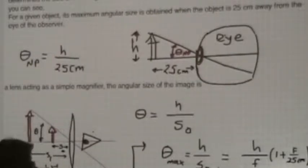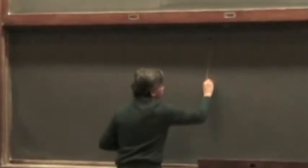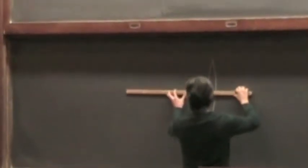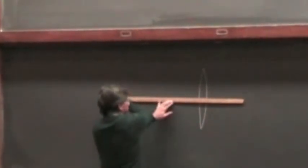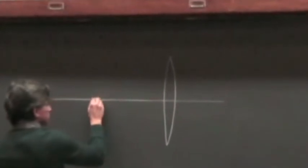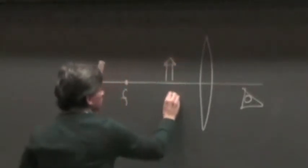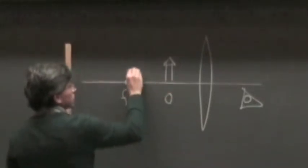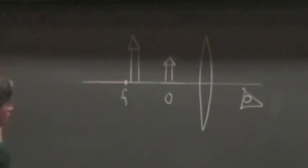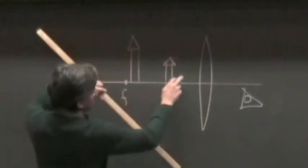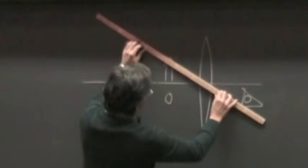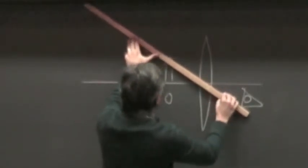But then you can use a magnifying glass. If you use a magnifying glass, the angular size of the object will be different. Suppose that this is the focal length of the magnifying glass — a converging lens. You have an object here, and we know there's going to be an image of that object produced by that lens. For a single lens, the object and image are always along the line defined by rays going through the center of the lens.